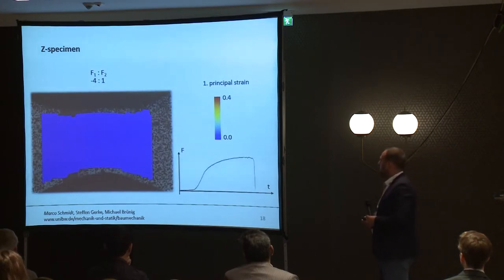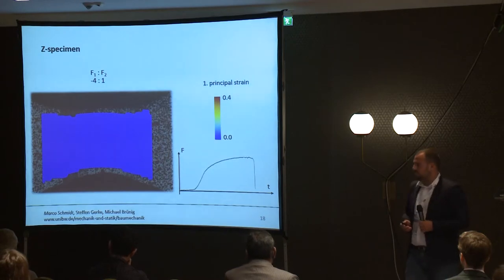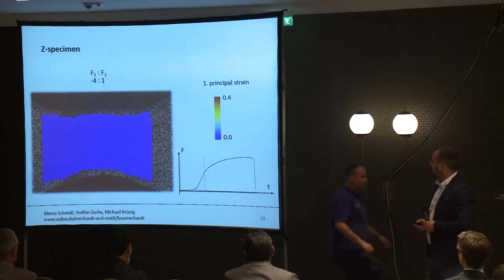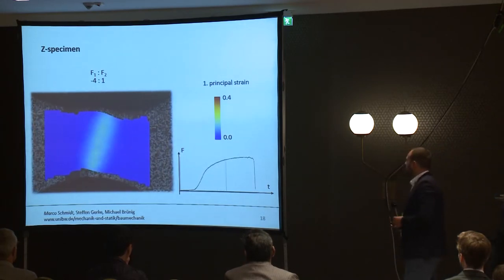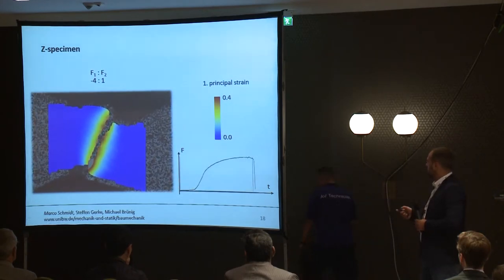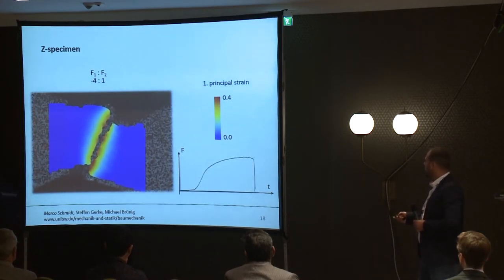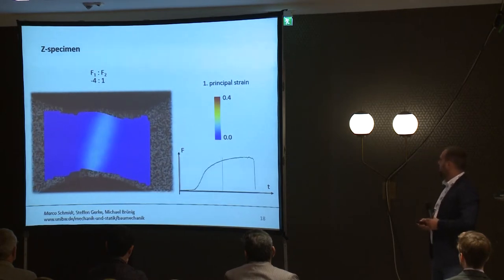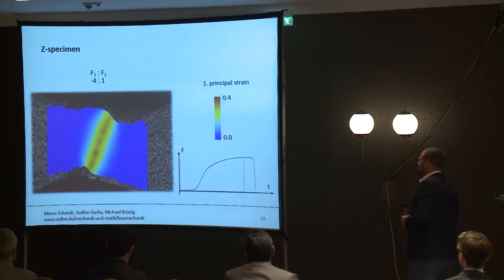Now, I want to show you a short movie of the development of the first principal strain in the experiment with the load factor minus four. On the right side, you can see a force-displacement diagram where you can see where we are in the experiment. Now you can see the strain localizes and the strain band develops from the bottom left to the top right. Yes, you can see the strain band which indicates early on how the specimen will fail.